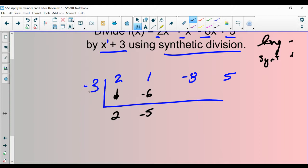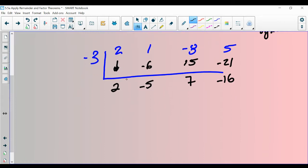And then repeat the process. Multiply negative three times negative five and write that here. When you multiply those, you get 15. Add seven. Multiply those negative 21. Add negative 16.